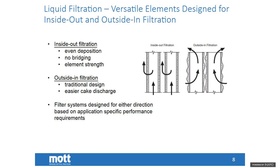Another advantage of inside-out filtration is that you're playing to the strength of the porous metal element. A rule of thumb is that a porous metal element is about five times stronger in the burst direction than in the collapse direction — so inside-out filtration uses burst pressure as the limiting component. In outside-in filtration, a typical filter design familiar to the industry, the benefit is that cake discharge is easier because there's more space to work with. Either design can be selected depending on the specific process and performance requirements.